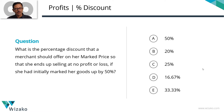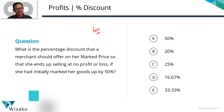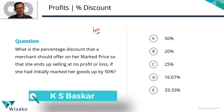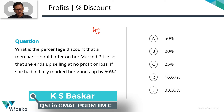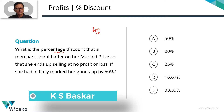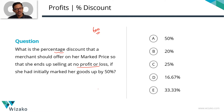This is a medium difficulty GMAT problem-solving practice question. Classify this one as a 600-level question from the topic of profits, focusing on the concept of percentage discounts. What is the percentage discount that a merchant should offer on her marked price so that she ends up selling at no profit or no loss, if she had initially marked her goods up by 50%?